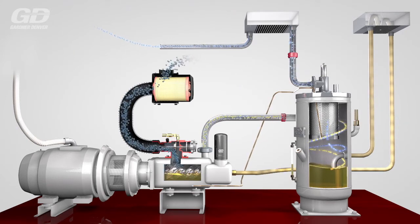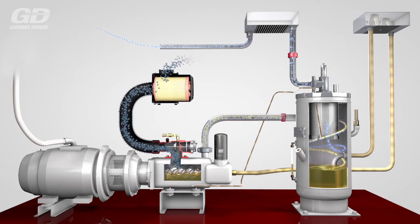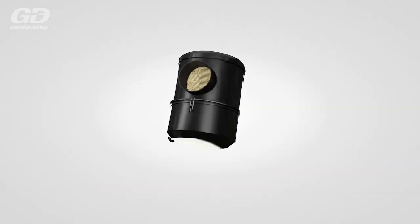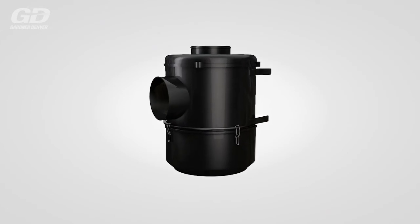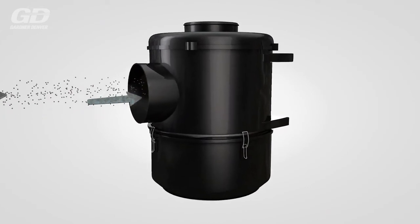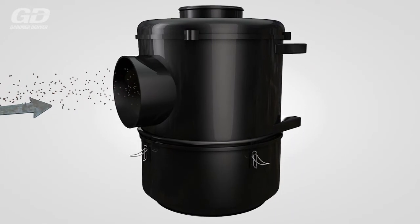So let's look at the first element of this system, the air filter. The air filter prevents dirt and dust particles from entering the compressor, protecting the screw and bearings against undue wear.